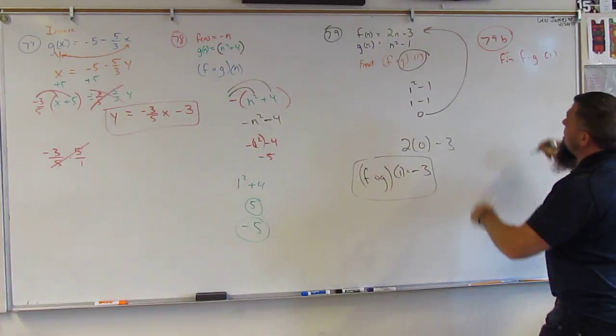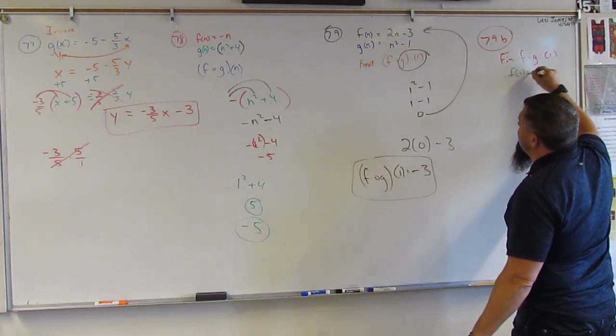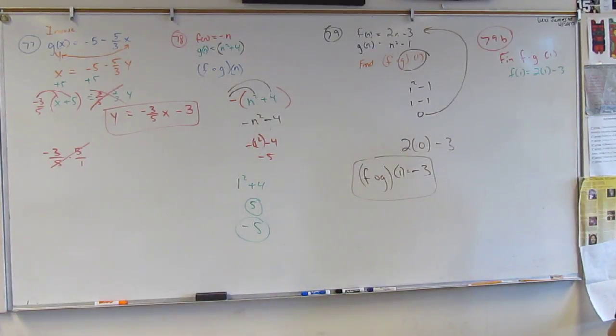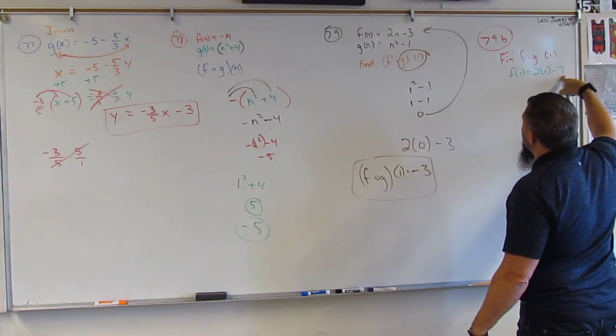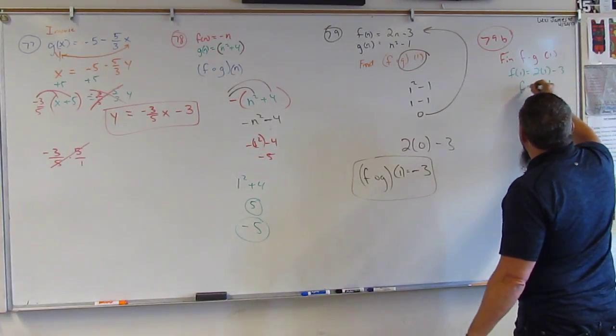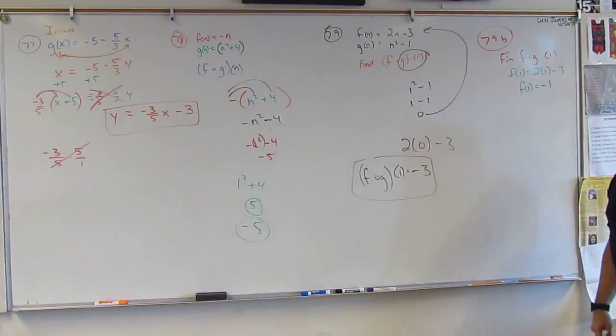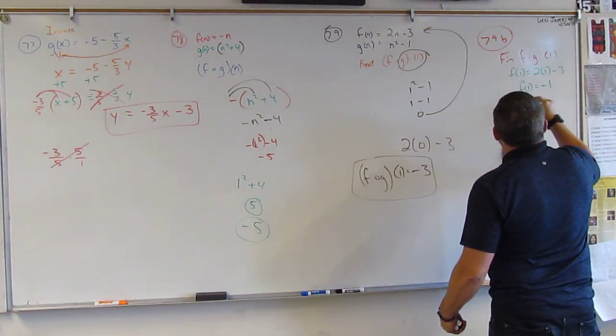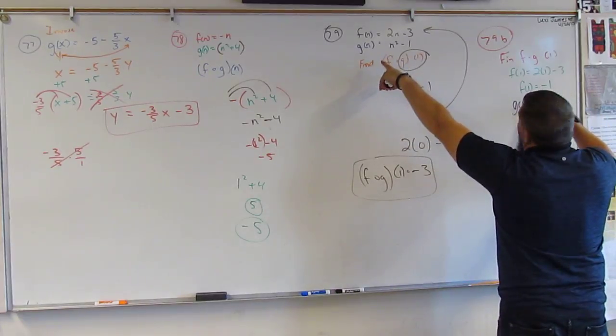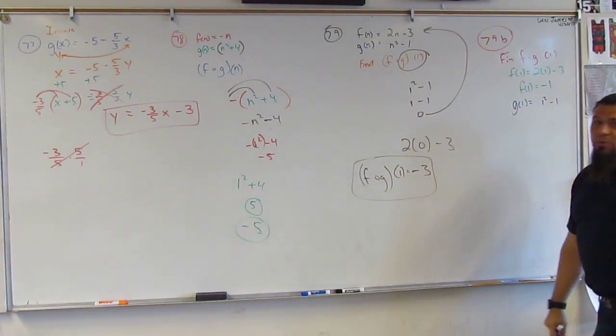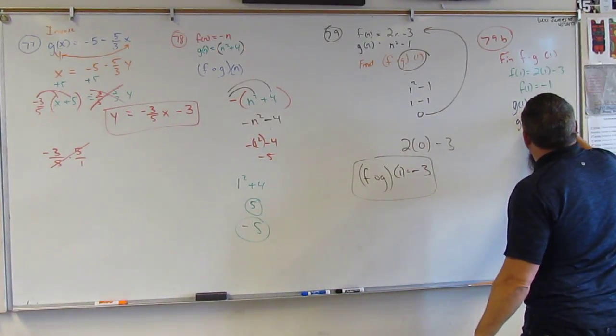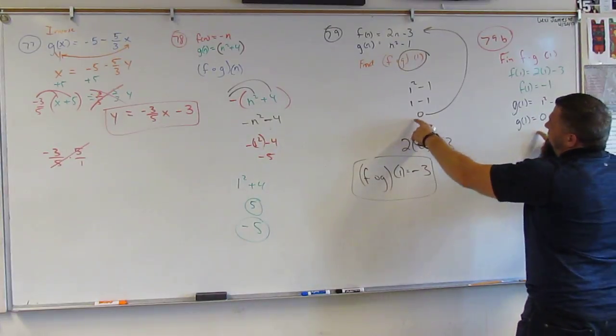And to do that, that's totally different. What we do there is we say F of 1 is equal to 2 times 1 minus 3. What's 2 times 1? 2. What's 2 minus 3? Negative 1. Okay? So, F of 1 is negative 1, right? Okay? And then they said G of 1. What's G of 1? Well, G is 1 squared minus 1. What's 1 squared? 1. Minus 1? 0. So, G of 1 is equal to 0. So, we found that first, right?